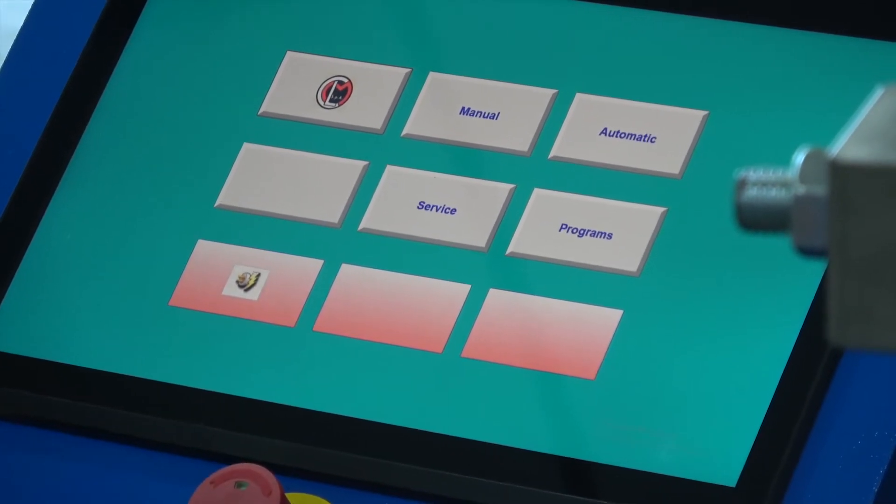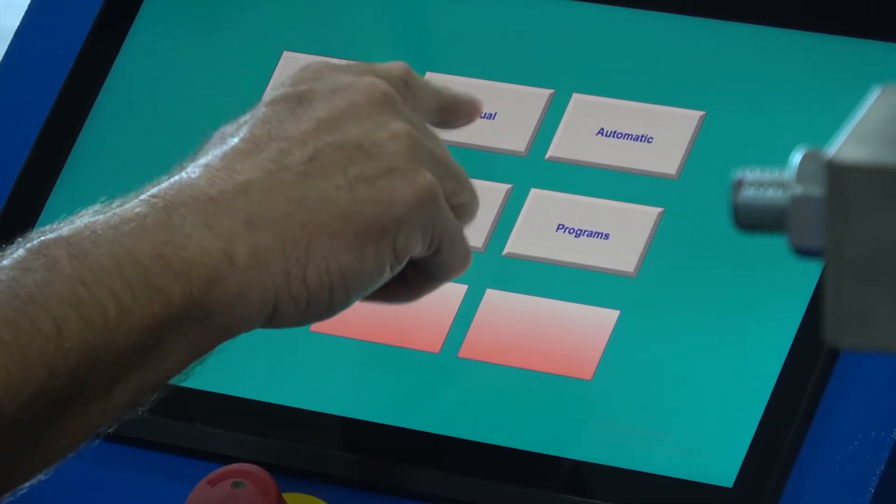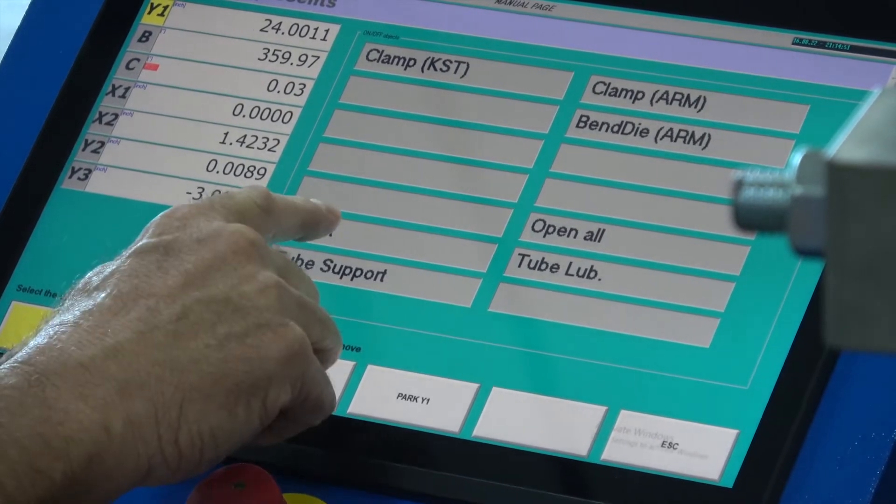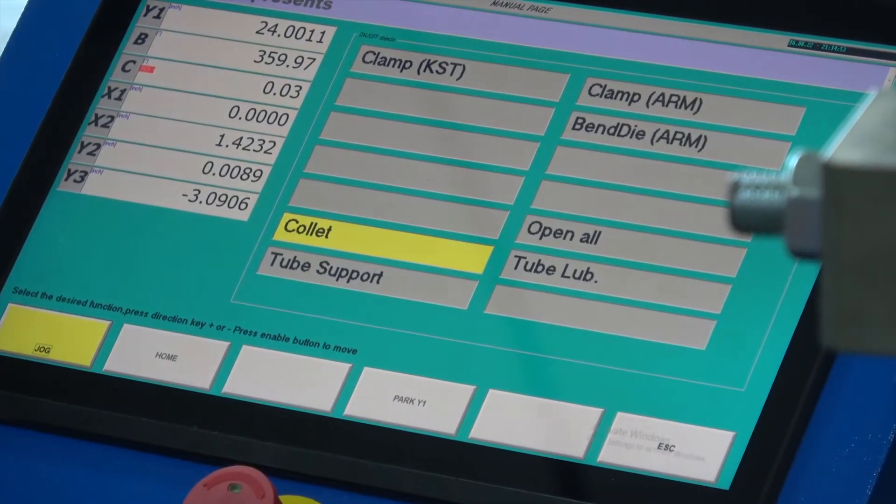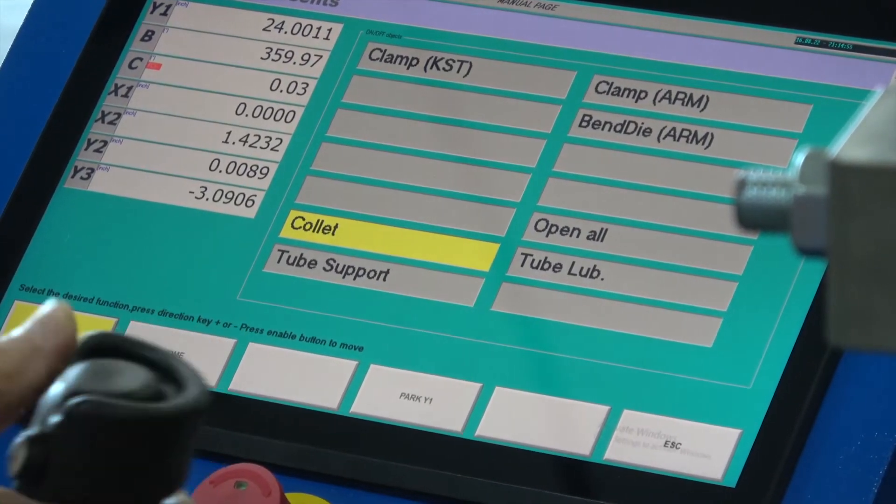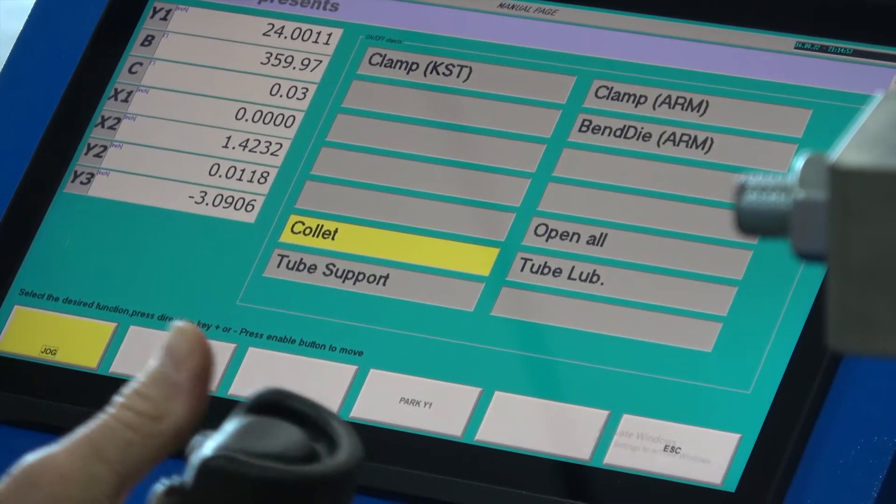We're going to come over to the control, flex manual, collet, take your hand down control, plus halfway down, closes the collet.